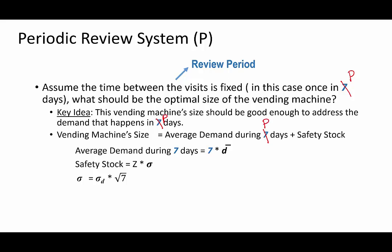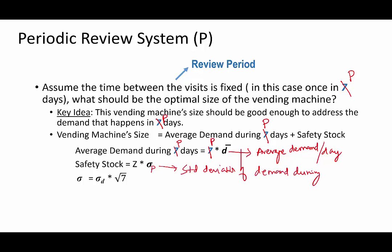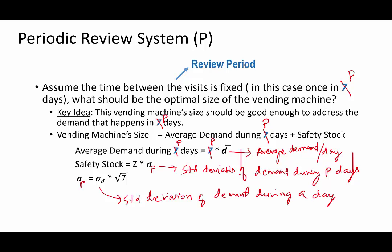The average demand during P days is nothing but P times D-bar, where D-bar is the average demand per day. The safety stock is Z times sigma-P, where sigma-P is the standard deviation of demand during P days, and sigma-D is the standard deviation of demand during a single day. So wherever you see seven, replace it with P.